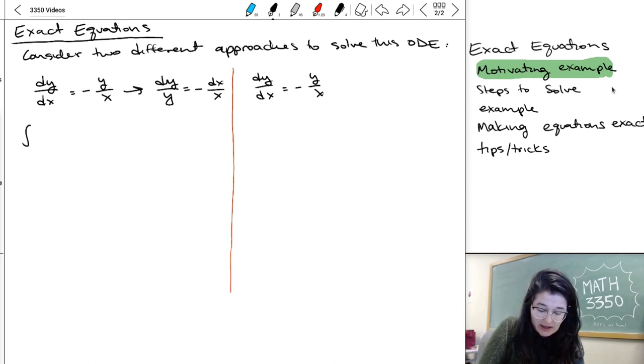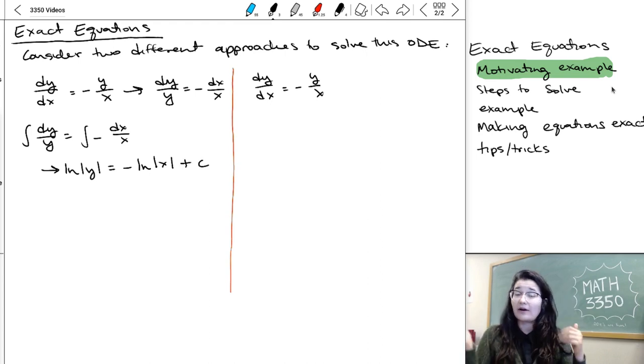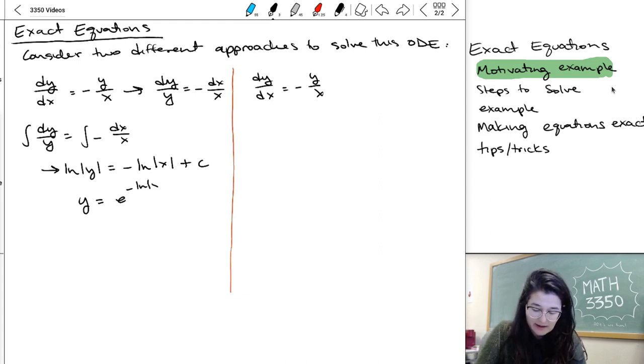So then my solution I get from integrating dy over y, setting it equal to the integral of minus dx over x, which gives me natural log of y equals minus natural log of x plus a constant that takes care of the constants on both sides. And then I could go ahead and solve for y by taking exponentials of both sides. So I've got e to the minus ln x plus c is e to the ln of one over x times e to the c. So that's just going to be some unknown constant times one over x.